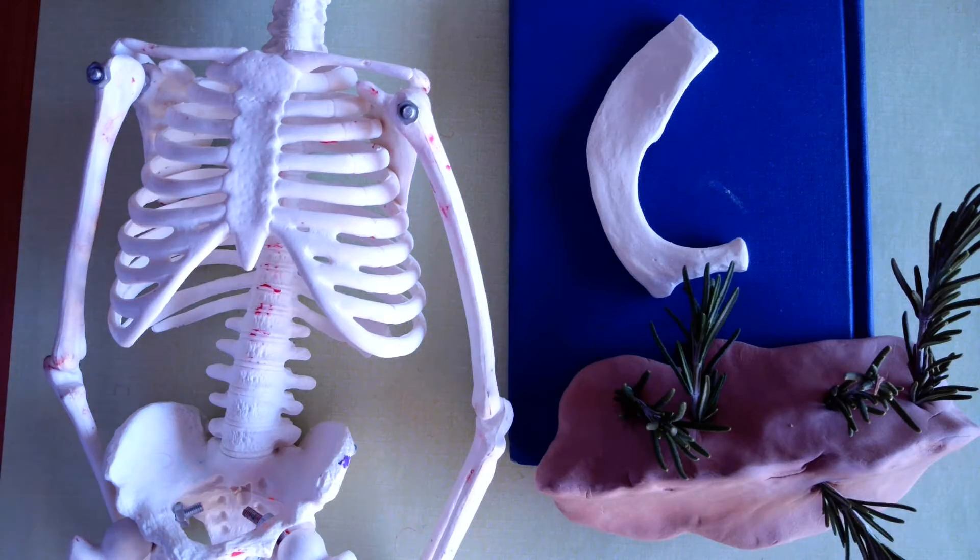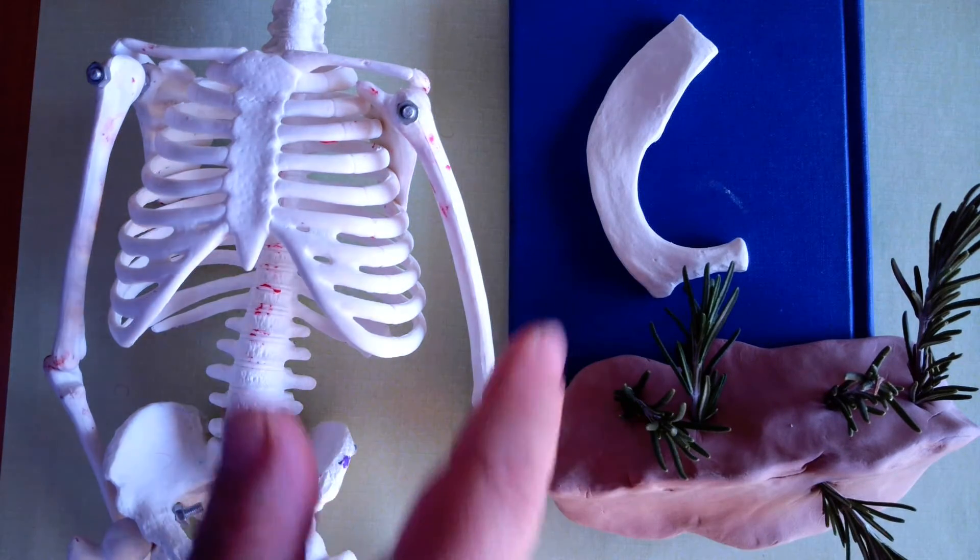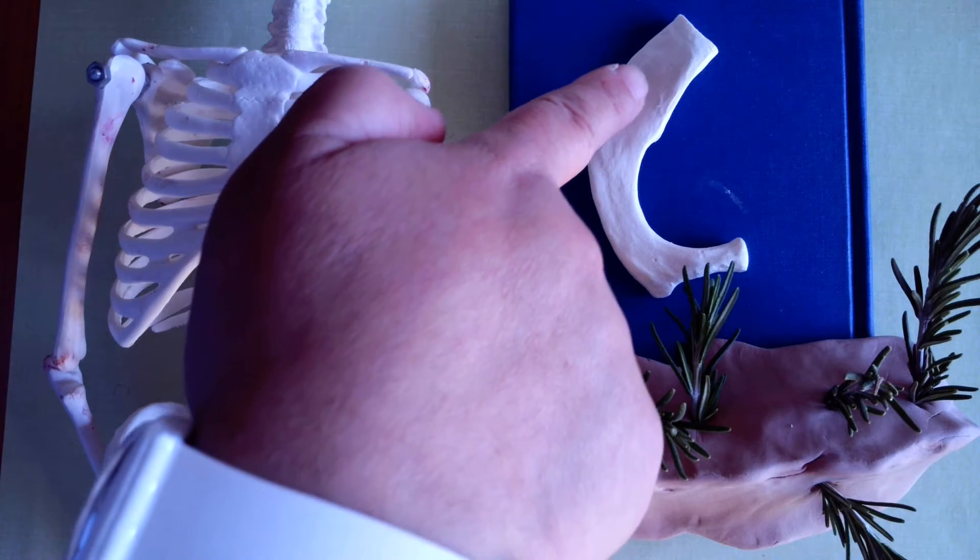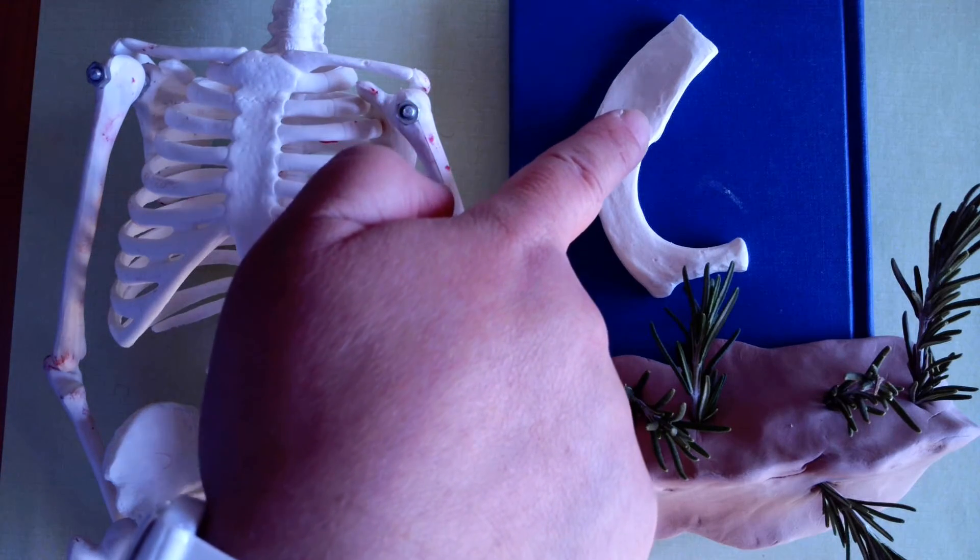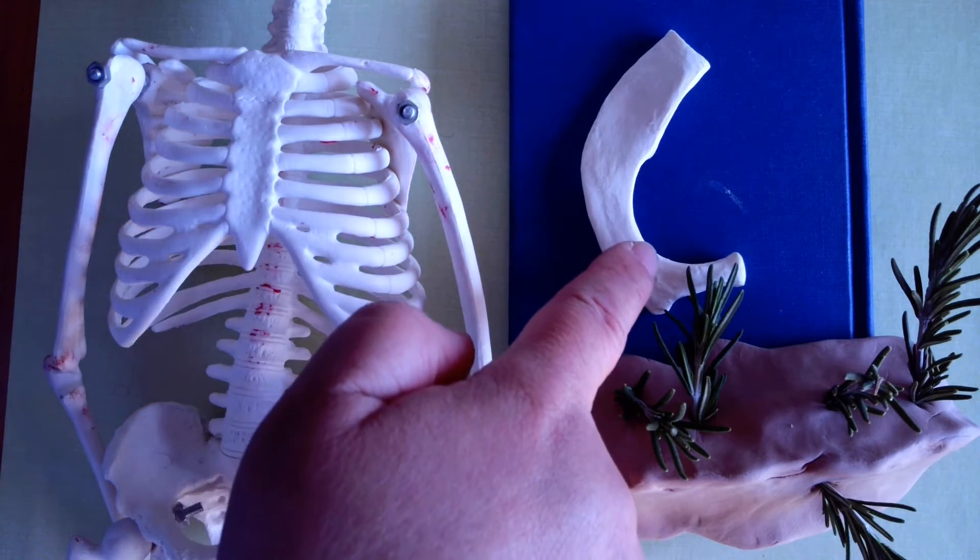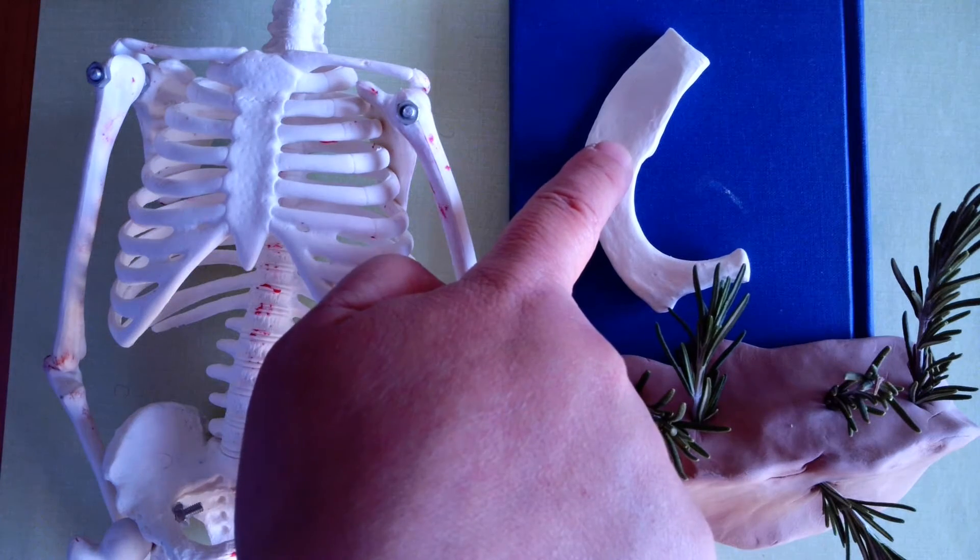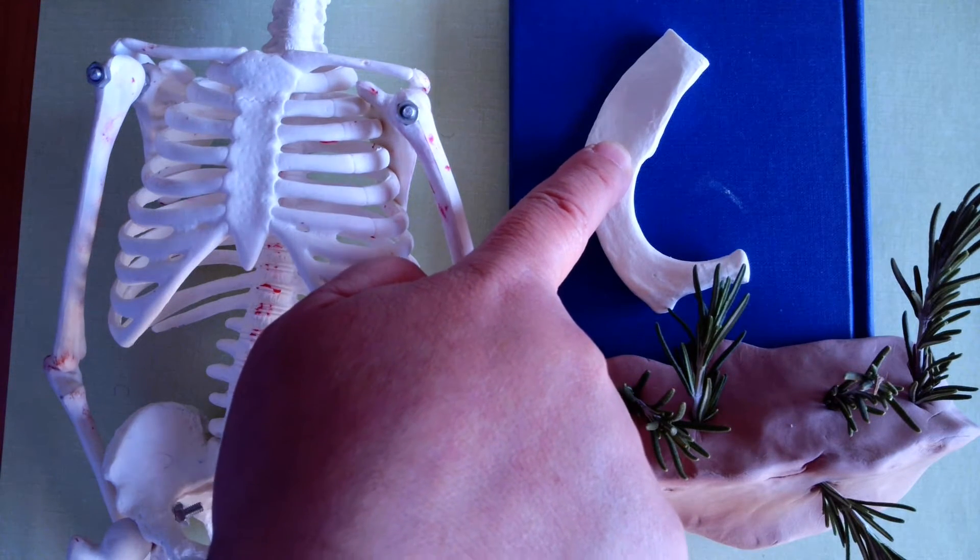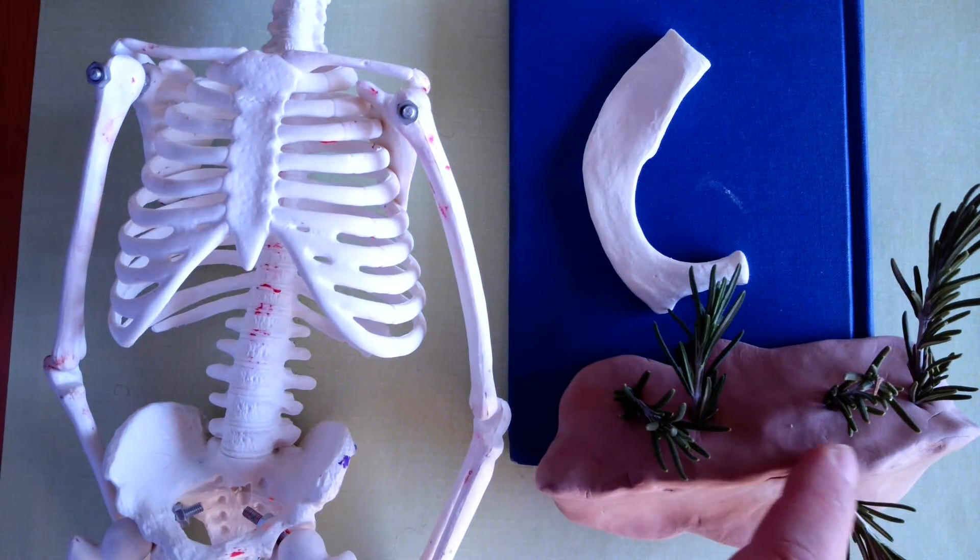Now going back to the first rib. The superior surface of the first rib has a slight ridge in this portion. But it's not as tall as this one.